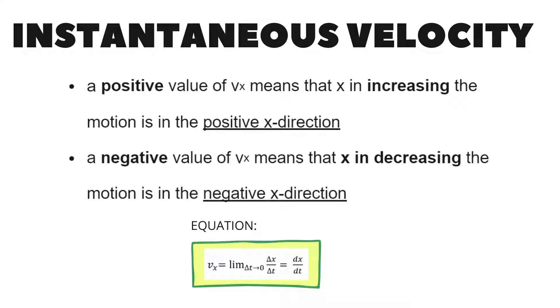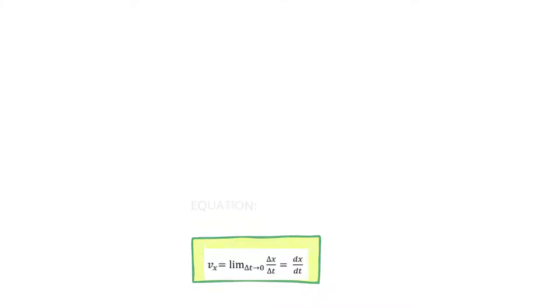A positive value of v sub x means that x is increasing, the motion is in the positive x direction. A negative value v sub x means that x is decreasing, the motion is in the negative x direction.